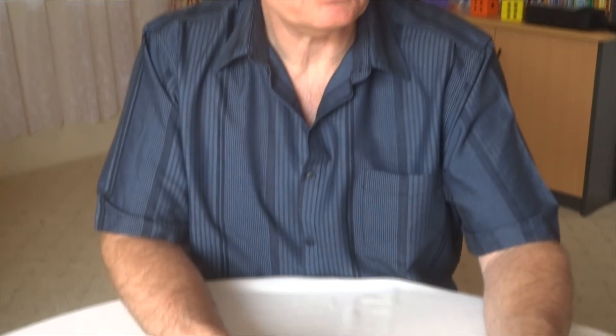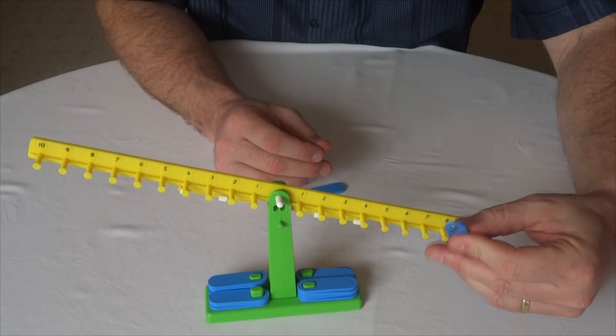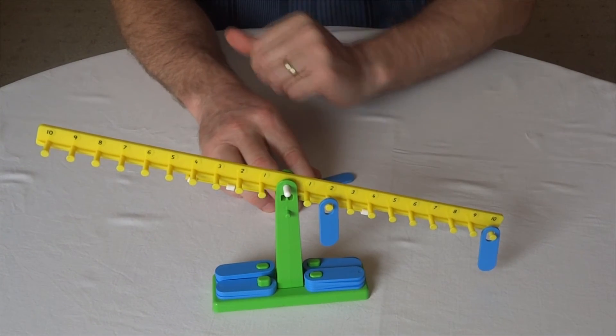I'd like to play with one other idea with the number balance. Clearly there's a lot of different things you can do with them, but let's take this example. So what I'm going to do is put a peg here on 10 and another peg on let's say 2, so I've made 12 on that side of the balance.